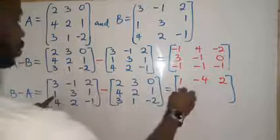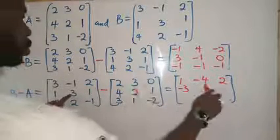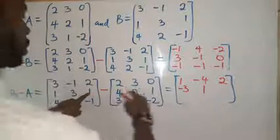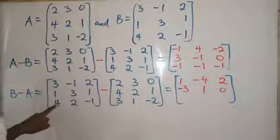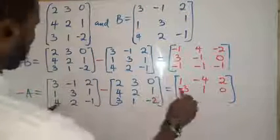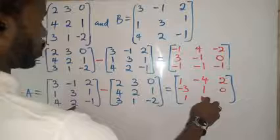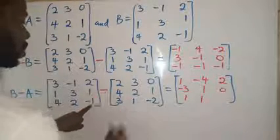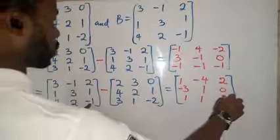Second row: 1 minus 4, giving you minus 3. Then 3 minus 2 is 1. 1 minus 1 gives you 0. Then you have 4 minus 3, which is 1. 2 minus 1 is 1. Then minus 1 minus minus, plus. So minus 1 plus 2, that gives us 1.